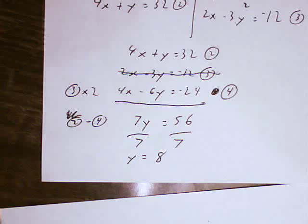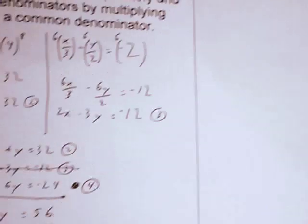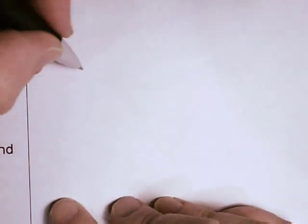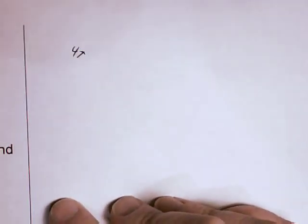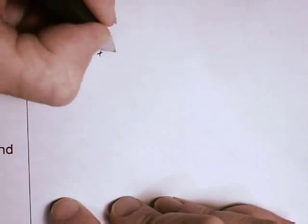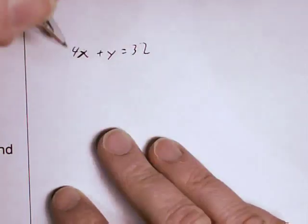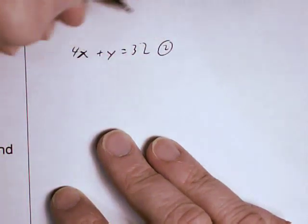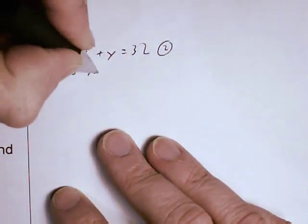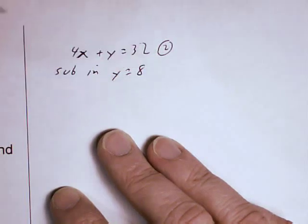Let's plug that in to equation 2 to get the x value. So equation 2 is 4x plus y equals 32. I'm going to sub in y equals 8.